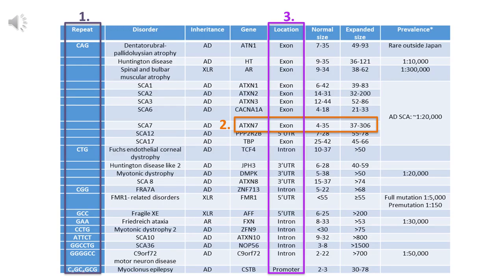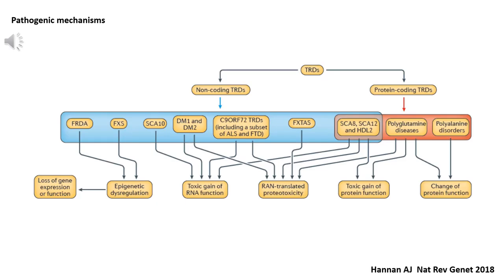There are now over 40 disorders linked to repeat expansions. This slide presents a subset and aims to illustrate several important features of these conditions. Firstly, there is considerable variability in both the sequence and length of different STRs, or short tandem repeats, associated with disease. Secondly, the difference between a normal allele and a pathogenic allele can be very small — for example, in spinocerebellar ataxia type 7, only two repeats separate a normal and pathogenic allele. Finally, the location of the STR is not limited to the coding sequence of the gene; it can occur in untranslated regions of the cDNA or indeed within introns. As a result, there is a diversity in the pathogenic mechanisms associated with different repeat expansions, and indeed multiple mechanisms may contribute to a single disorder.